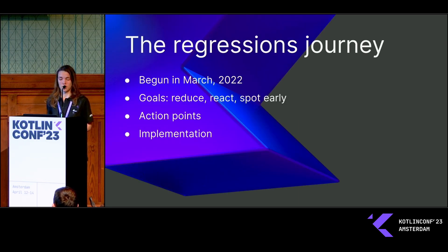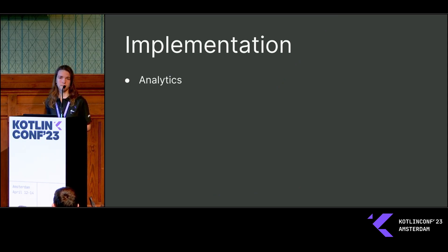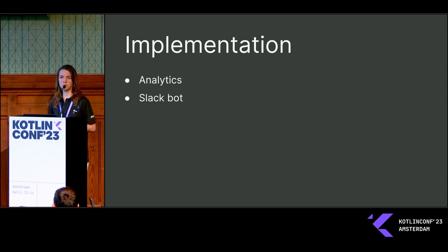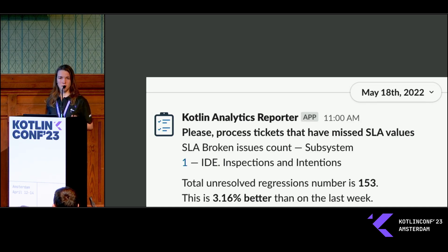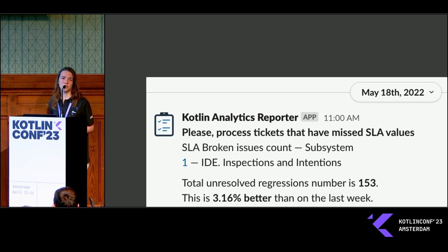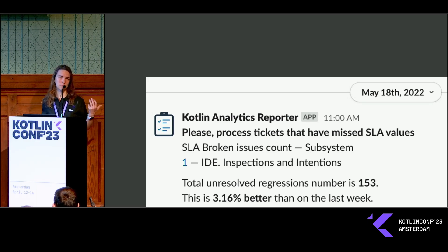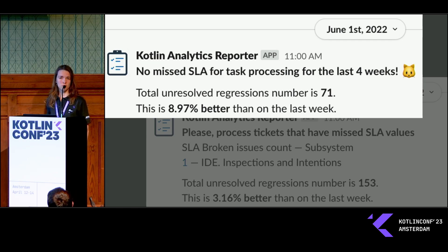When we implemented this, we had analytics in place and the Slack bot. But when you decide to begin a new life from Monday, you still have to deal with what you already lived with. In our tracker we already had a lot of open regressions — by the time we started this journey with the Slack bot, we had 150 regressions that would block every single release, be it a release candidate or stable release.